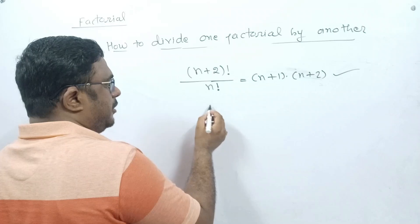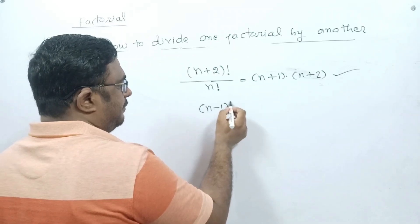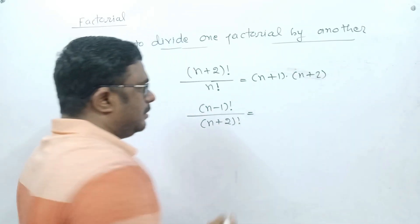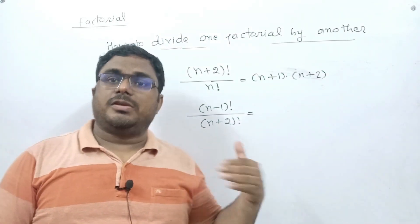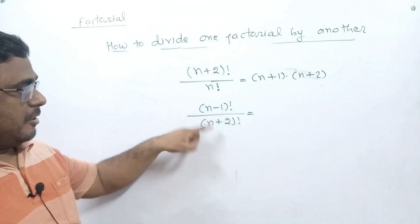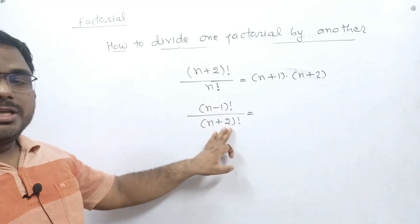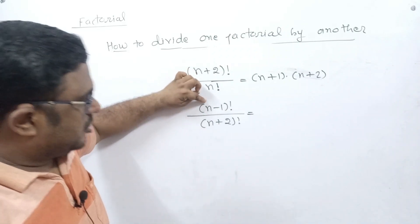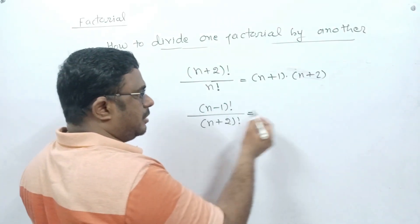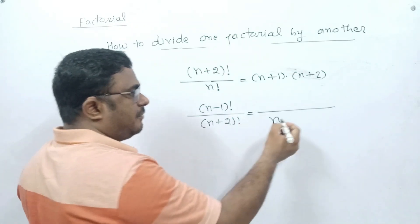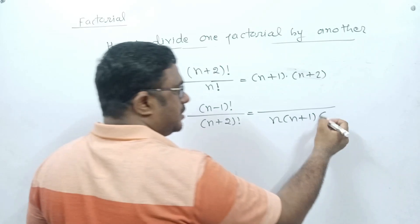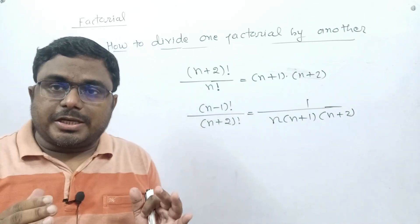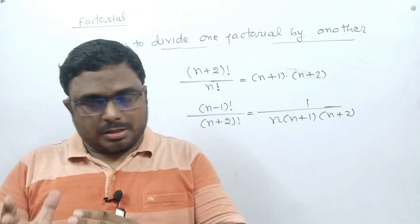One more example: (n−1)! in the numerator and (n+2)! in the denominator. Decide which is smaller — n−1 is smaller and n+2 is greater. Write down the natural numbers just greater than n−1: those are n, n+1, and n+2. Since the denominator is larger, the result is 1 / [n(n+1)(n+2)]. I hope you have understood how to divide one factorial by another.